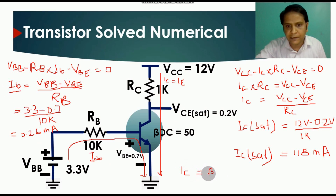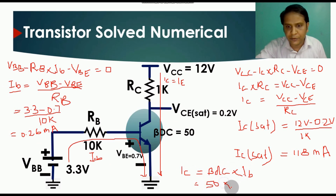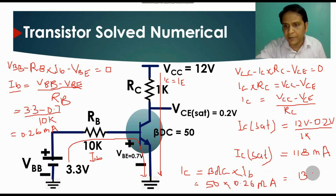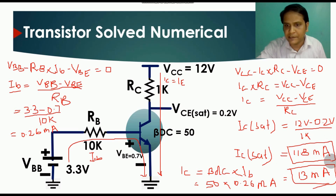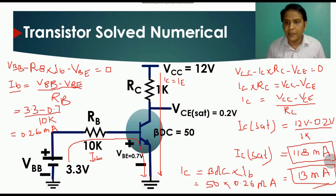Now using IC equals beta DC times IB: IC equals 50 times 0.26 milliampere, which equals 13 milliampere. The maximum saturated collector current IC(sat) is 11.8 milliampere. Since the calculated IC of 13 milliampere exceeds IC(sat) of 11.8 milliampere, the transistor is saturated.